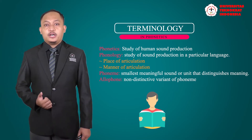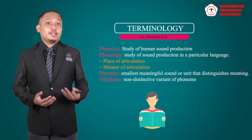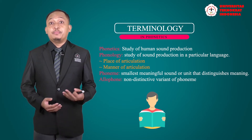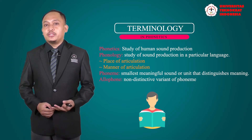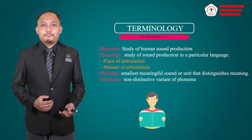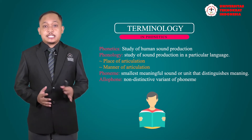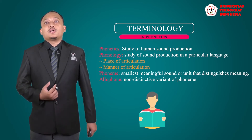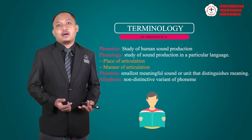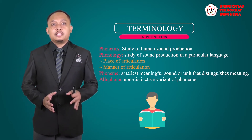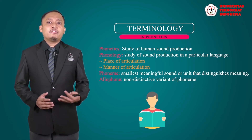Number one is the phoneme. A phoneme is the smallest unit of language that distinguishes meaning. For example, in Indonesian, the word 'kita' — if we change the 't' sound to an 'n' sound, it becomes 'kina', which changes the meaning. That is the basic principle of the phoneme.